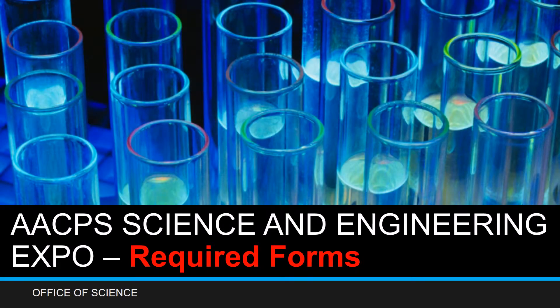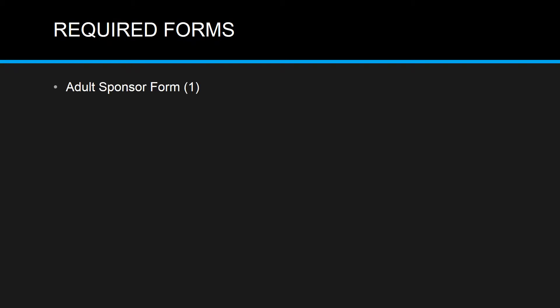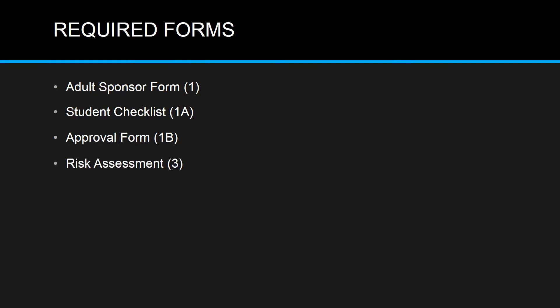Welcome to the Anne Arundel County Public Schools Science and Engineering Expo Required Forms Tutorial. The required forms include the Adult Sponsor Form 1, Student Checklist 1A, the Approval Form 1B, and most of the time the Risk Assessment Form 3.